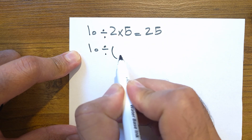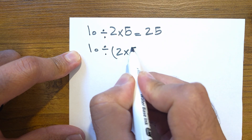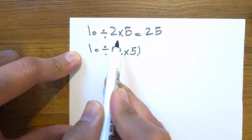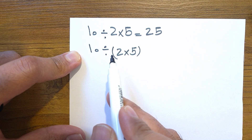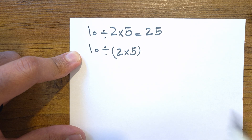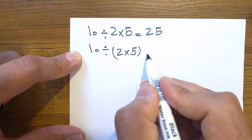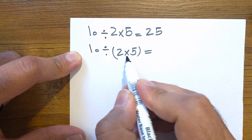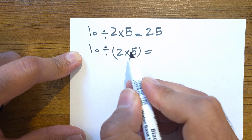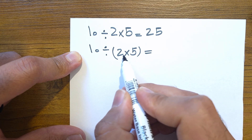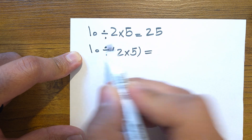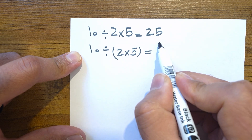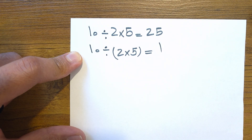Now what about 10 divided by (2 times 5)? That's the same numbers, but with parentheses around 2 times 5. Parentheses change everything — they have the highest priority. First, we do whatever is inside: 2 times 5 is 10. Then 10 divided by 10 is 1. That's the answer.